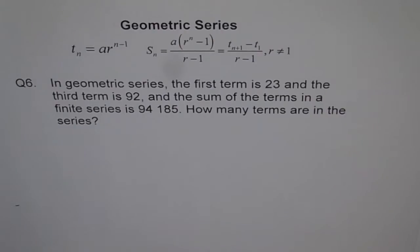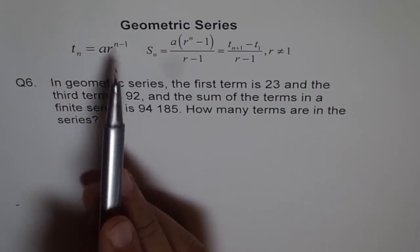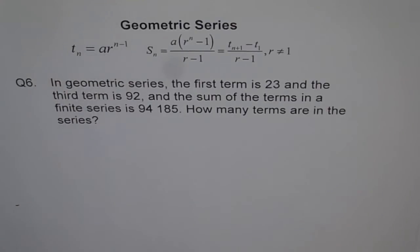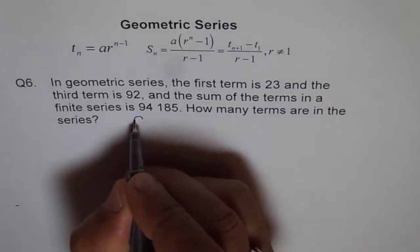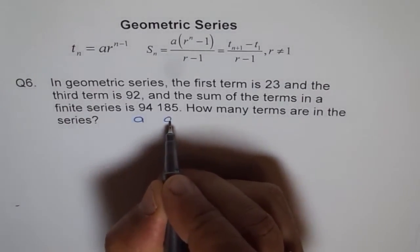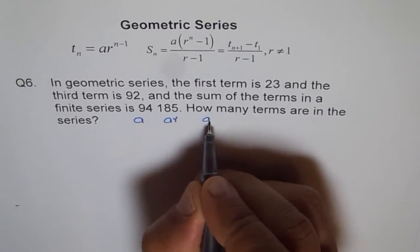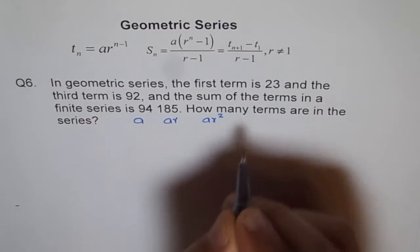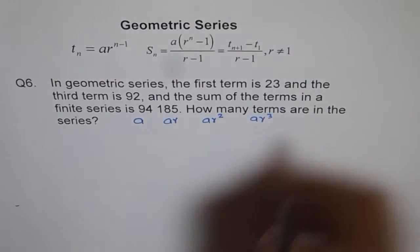In a geometric series we can write the terms as tn equals a·r to the power of n minus 1. So basically the terms are: if the first term is a, the second term is a times r, then the third is a times r squared, and then a times r cubed, and so on.